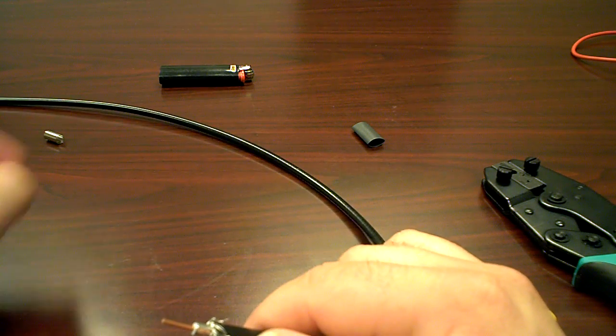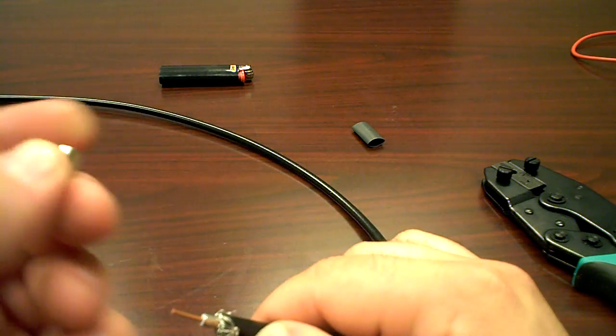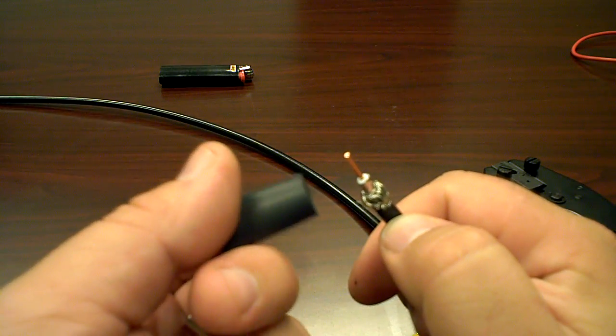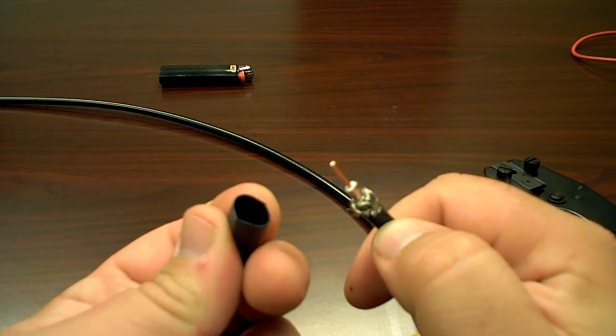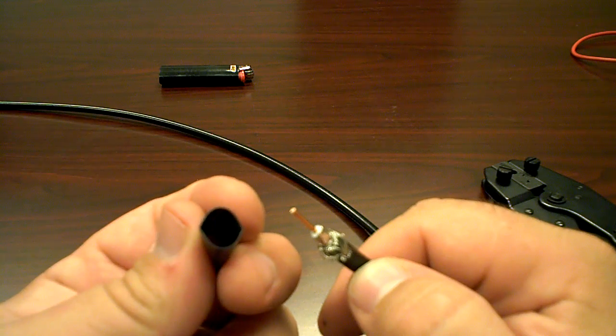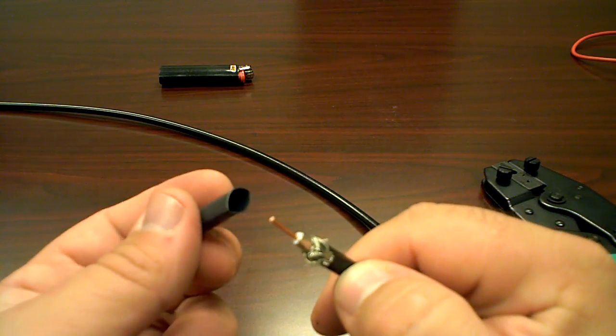So next basically what we're going to do is, also you see in the connector, this is the actual crimp sleeve. This is what they call heat shrink. I use heat shrink just as added protection. If you're actually out in the field or something, this is going inside of a box, it may not be necessary, but if it is handy, I would like to use it.